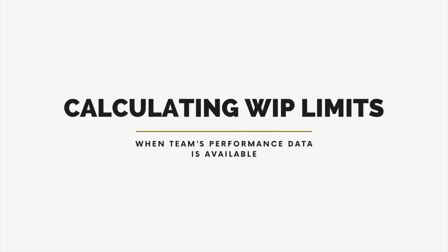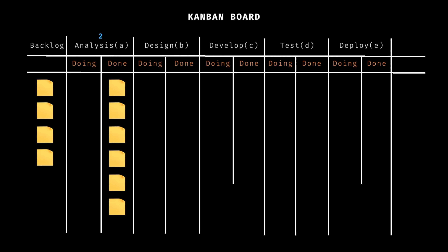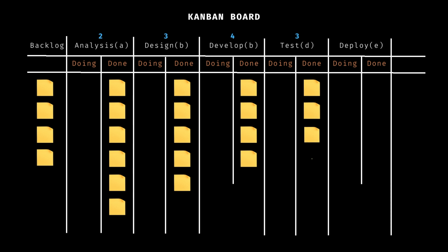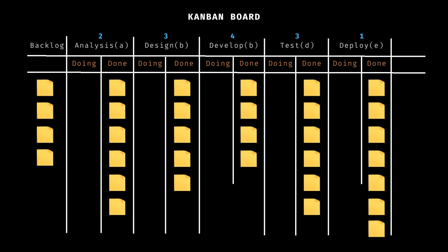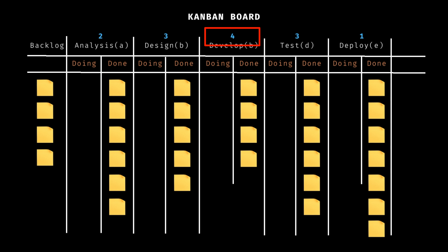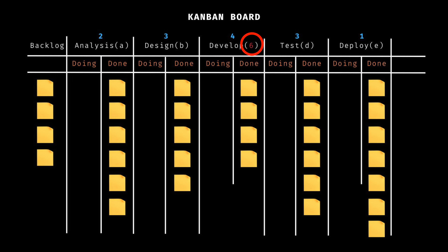Calculating WIP limits when we have data on the team's performance available. Let's say the analysis column receives six items per month with two people working on it, design gets five items with three people, development gets four items with four people, test gets six items with three people, and deployment gets seven items with one person. It's clear that the development column is the slowest — it has the most people working on it and delivers the fewest items. With the slowest column being development, and four developers working on it, we set the WIP limit for that column equal to the number of people plus a 50% buffer. With four developers, the WIP limit for the development column would be six. This is our first WIP limit, which will serve as a baseline for all other WIP limits.